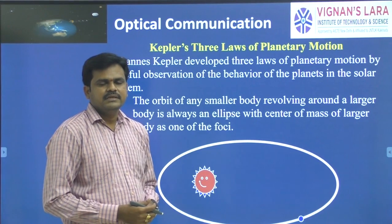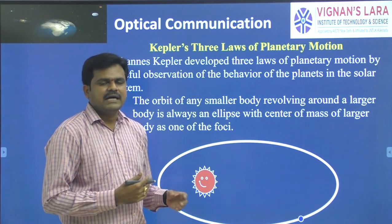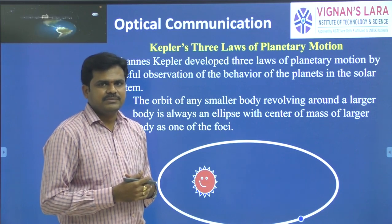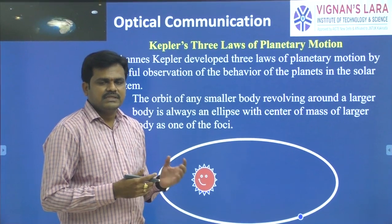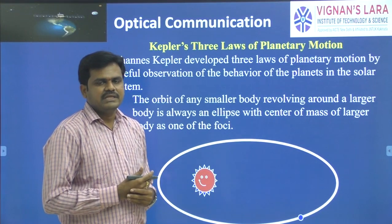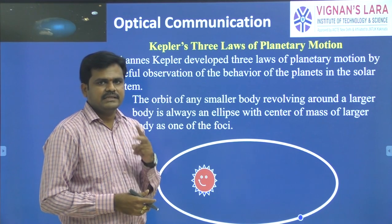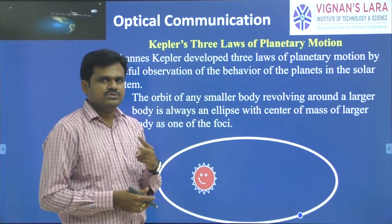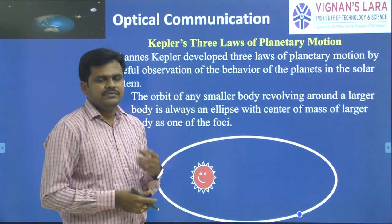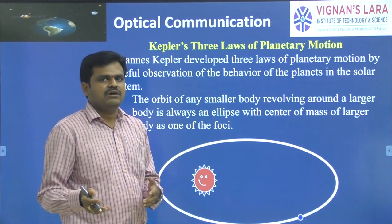Hi dear students. In the previous class we have learnt orbital mechanics. We started with finding the orbital time period as well as the velocity of the satellite in its orbit with the help of two forces acting on the satellite — one is centrifugal force, another one is centripetal force. Using these two forces, which are equal and working in opposite directions on the satellite, we tried to find out the velocity of the satellite as well as the time period of the orbit.